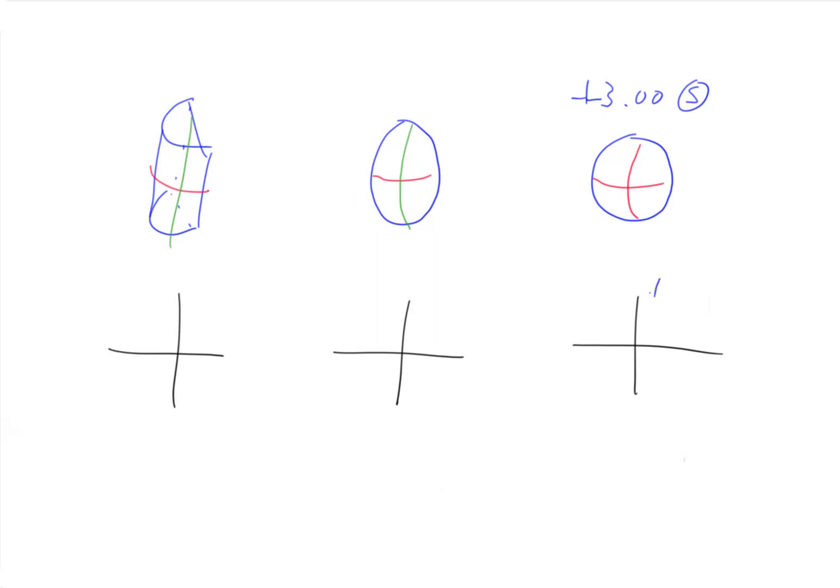What that means is we have a power of plus three along its main axes, but also we have a power of plus three everywhere in the lens. So anywhere we look in that lens, we have a power of plus three.